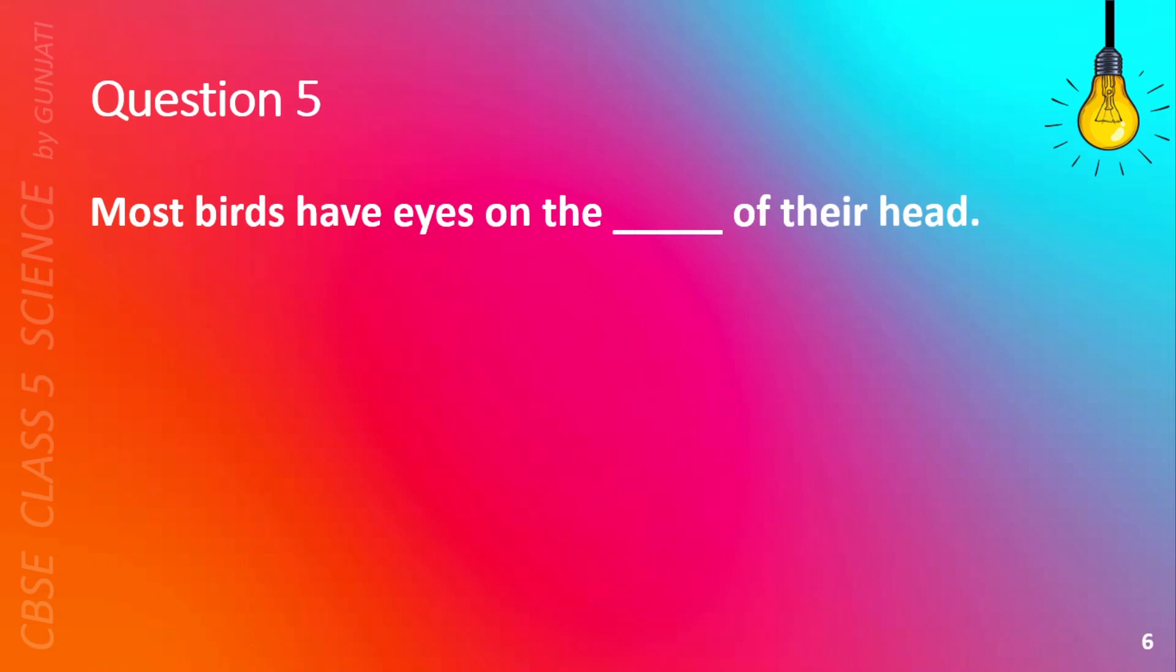Question 5. Most birds have eyes on the blank of their head. A. Different sides, B. Front, C. Same sides, or D. Back. The correct answer is A. Different sides.